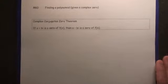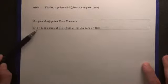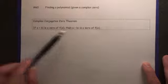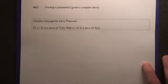We need to know the complex conjugate zeros theorem, which basically says if a plus bi is a zero, then a minus bi is a zero. It's as simple as that.